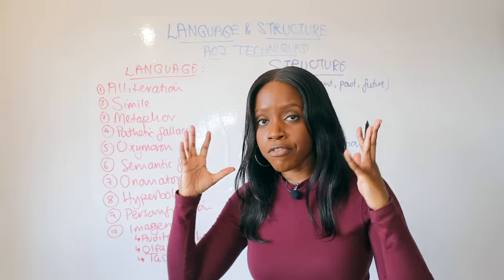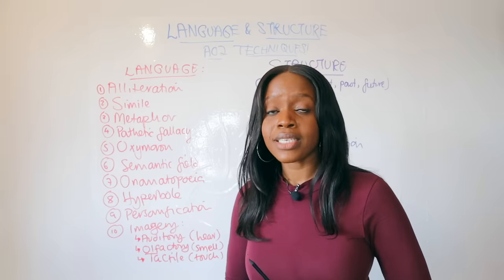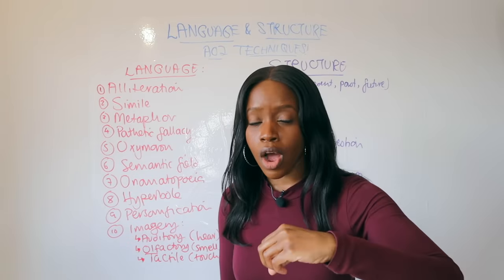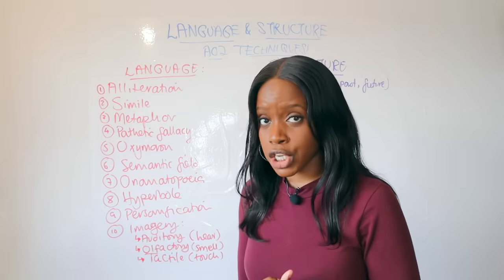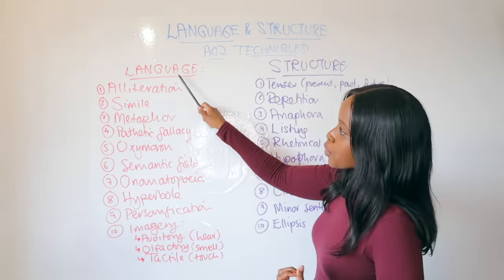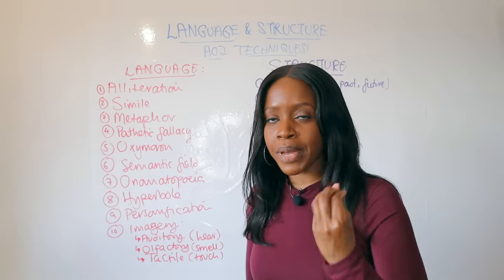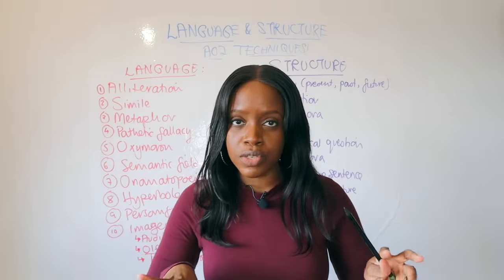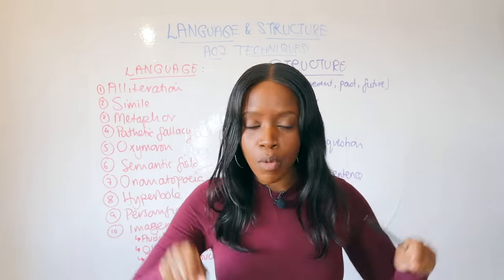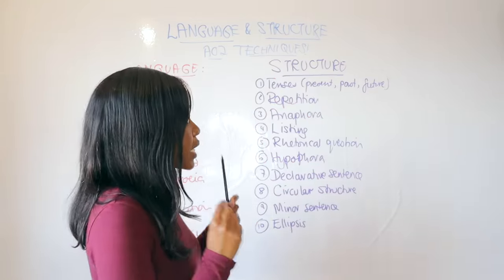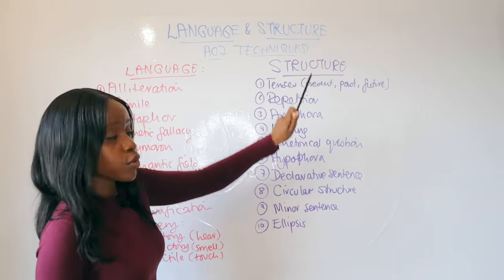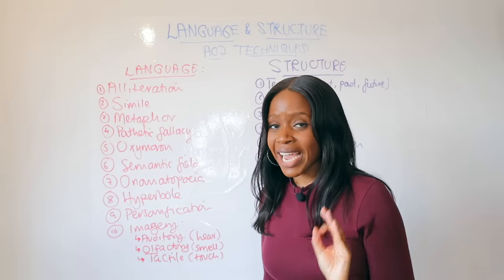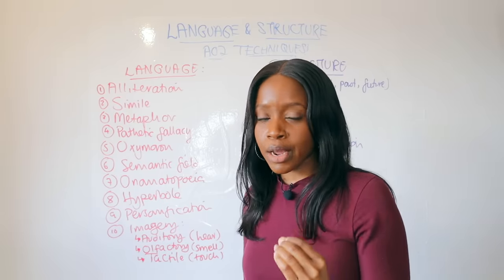To be very clear on language and structure: when it comes to AO2, this is you showing off your awareness of subject terminology. In other words, when you're quoting, are you able to pick out and identify interesting language techniques that the writer has used? When you look at the building blocks of the language, are you able to identify what techniques the author is using? Equally, you need to be able to identify some interesting structural techniques.